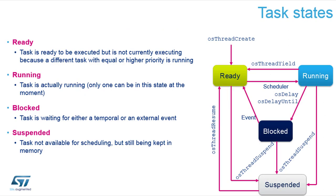We can see the state machine — how tasks can operate. When they are created, they are created in a ready state. When the scheduler decides to execute it, it gets to the running state. From running, it can get again into the ready state by yielding, and it can get as well to the blocked state by waiting for some resource or for a timeout. It can also be suspended, and it can be suspended from any of the other tasks.